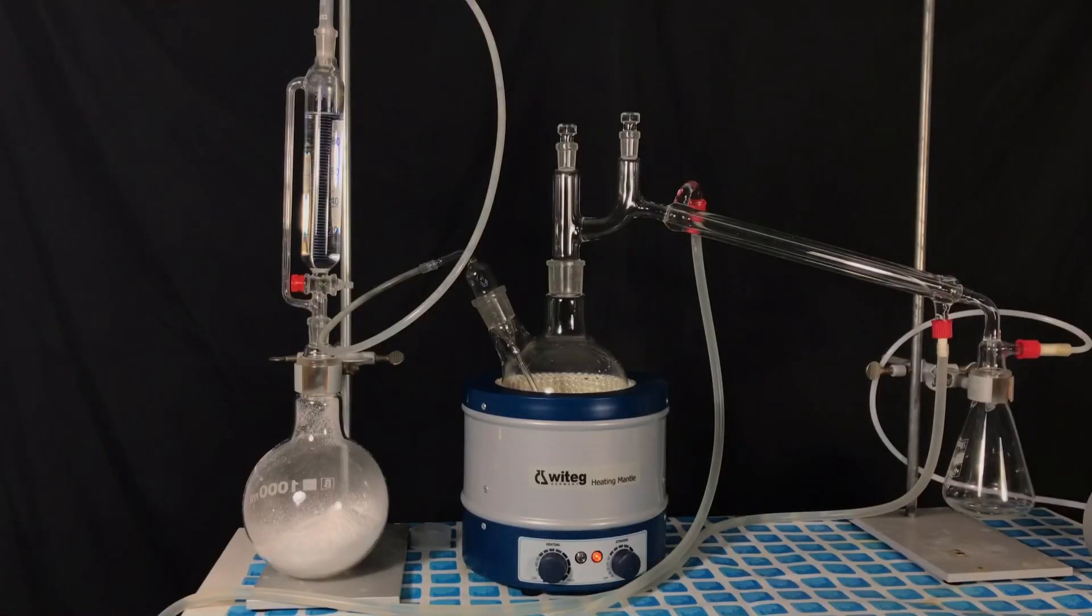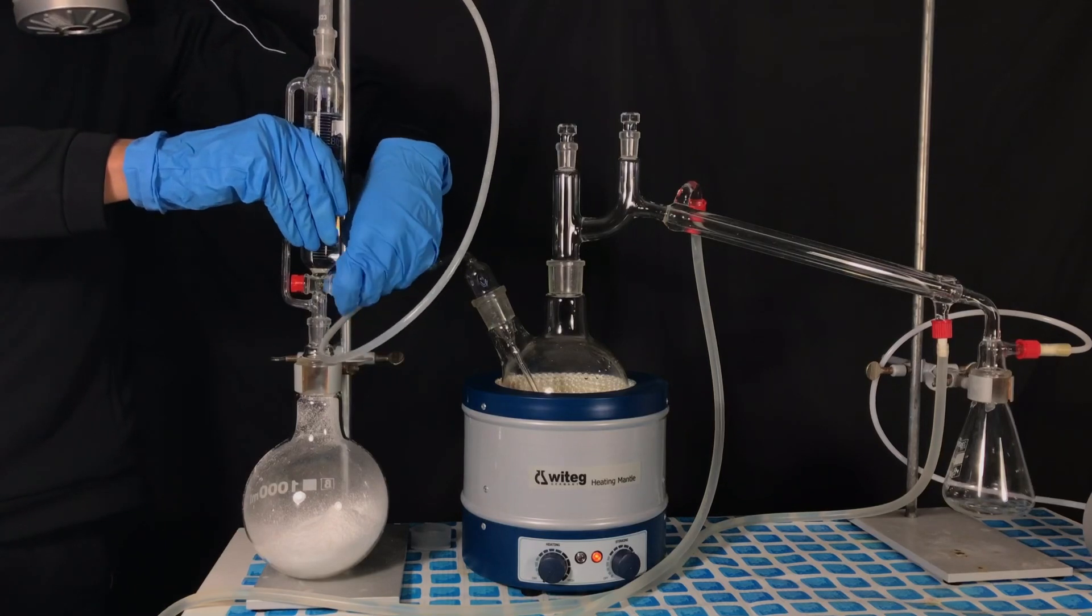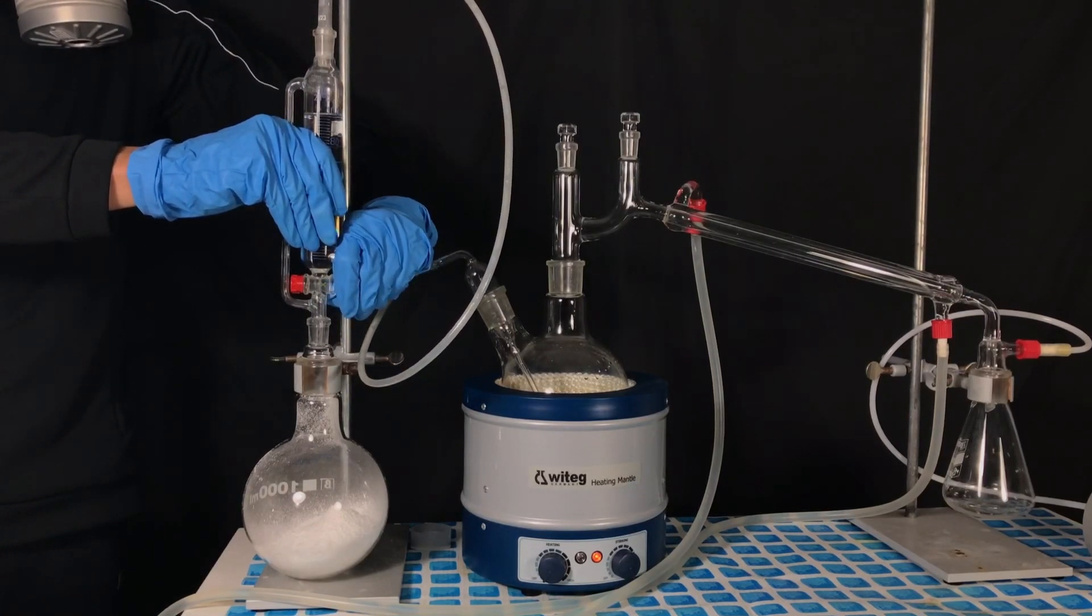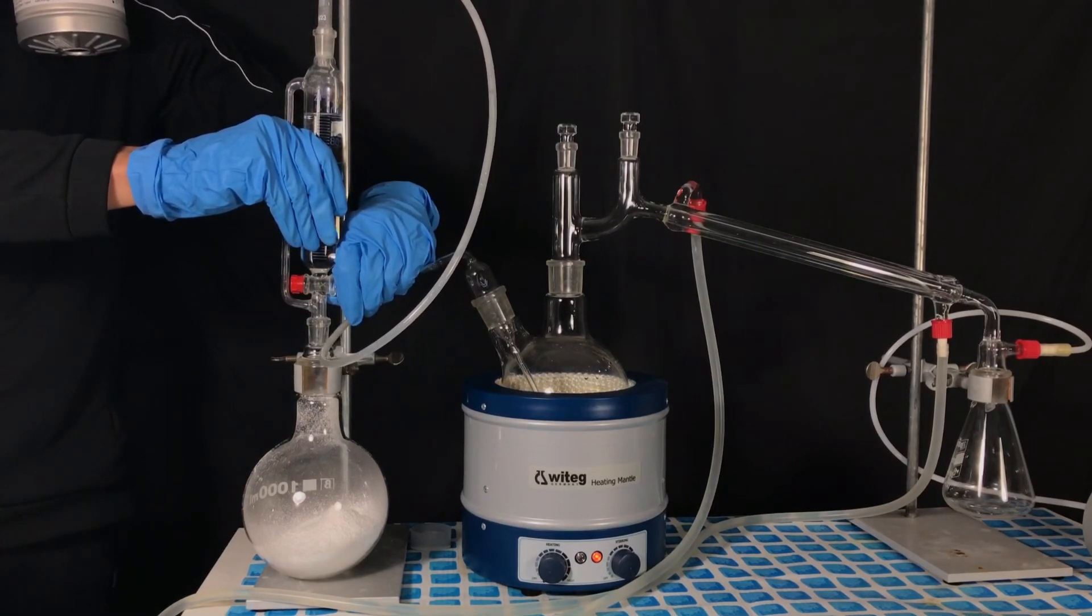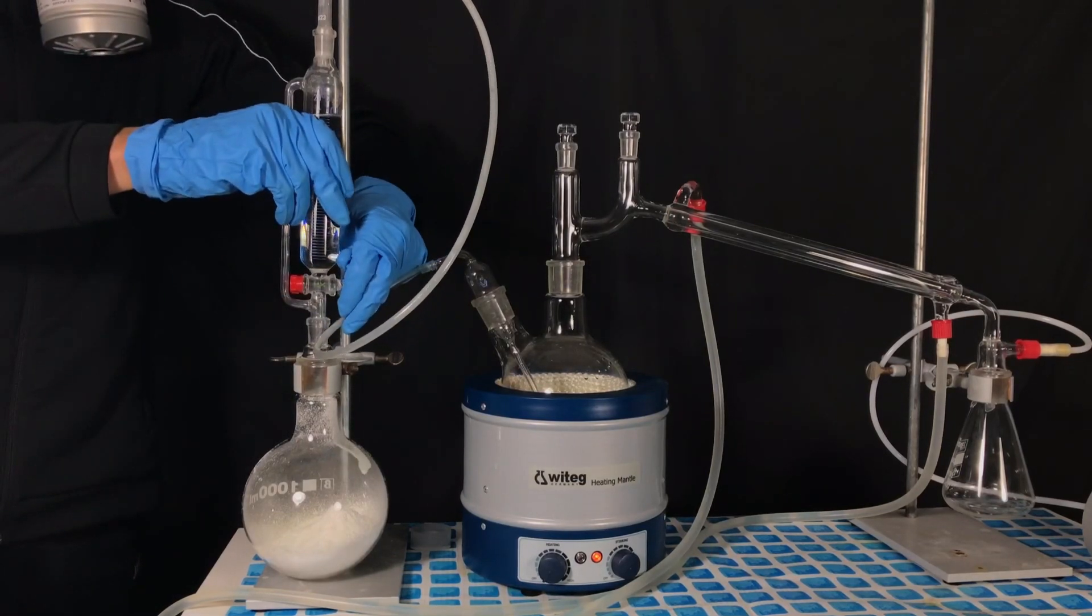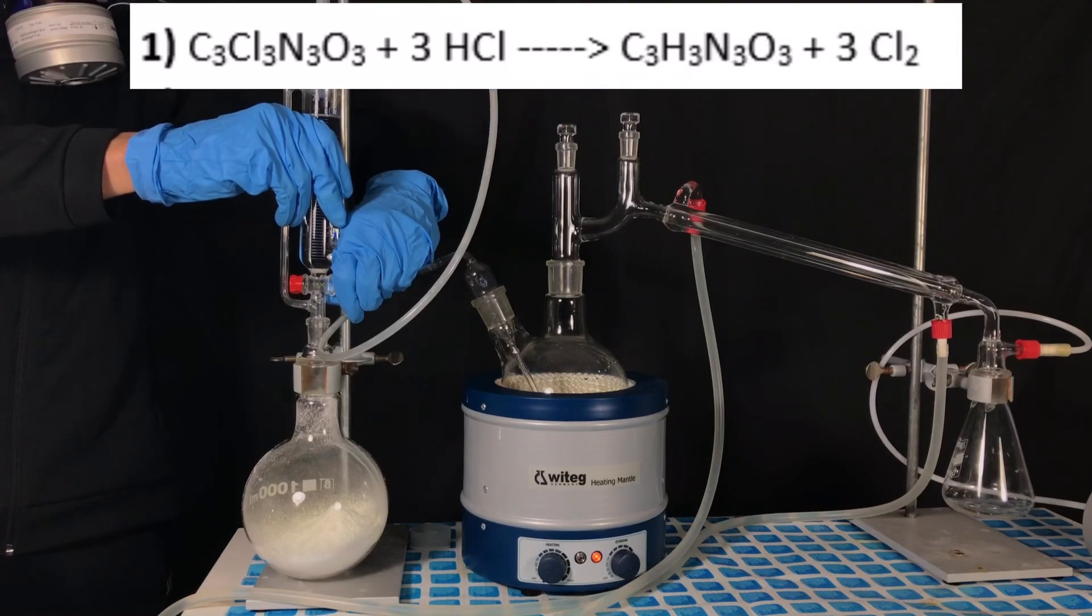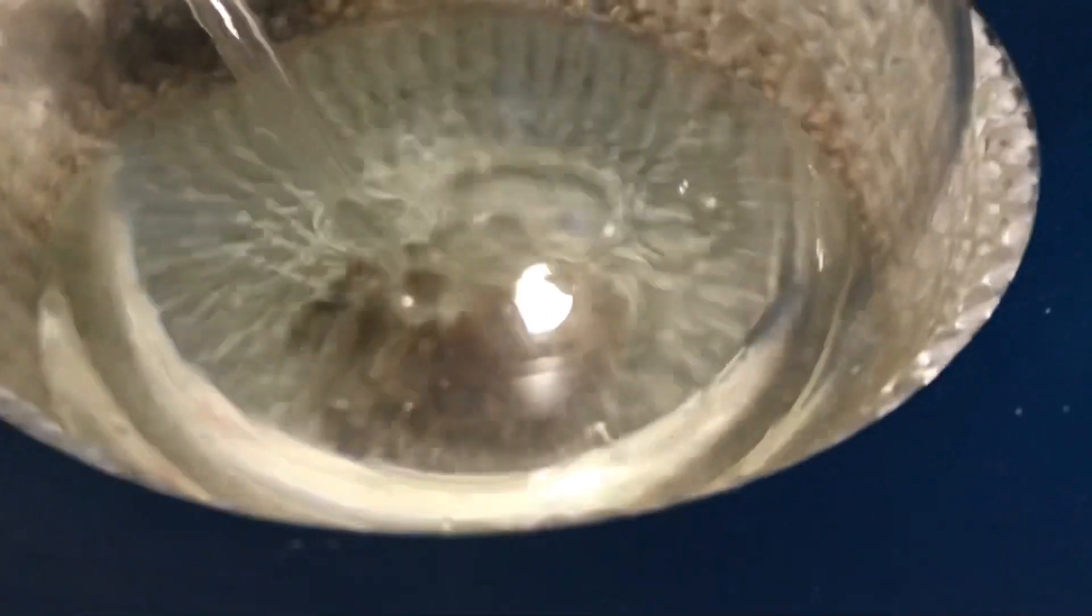To start the reaction the valve of the addition funnel was opened. Hydrochloric acid was allowed to drip onto the TCCA. Immediately a yellow gas becomes visible. This is chlorine. The first reaction taking place is TCCA reacting with hydrochloric acid to form cyanuric acid and chlorine gas.